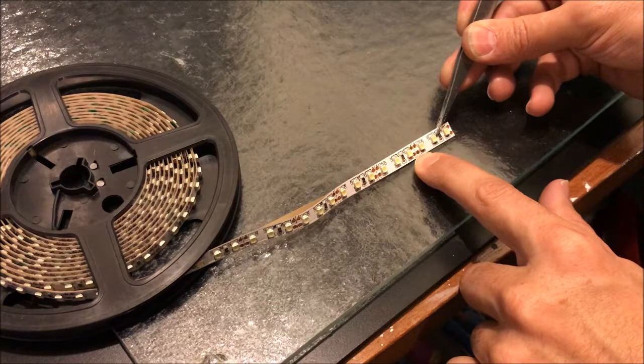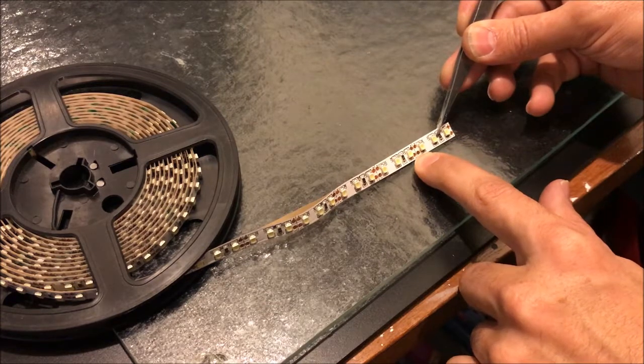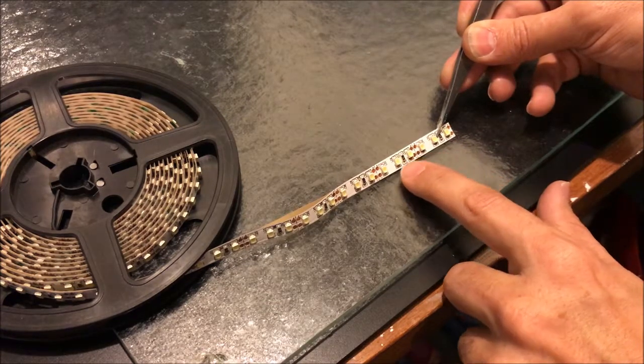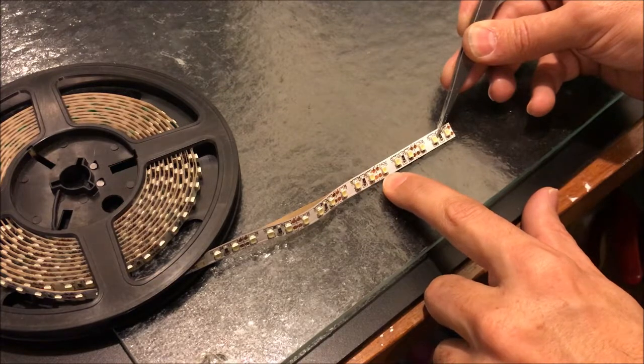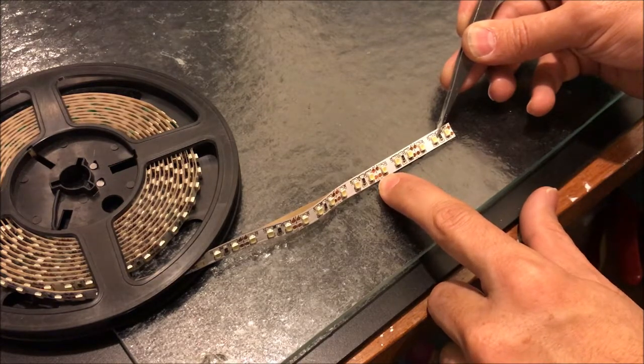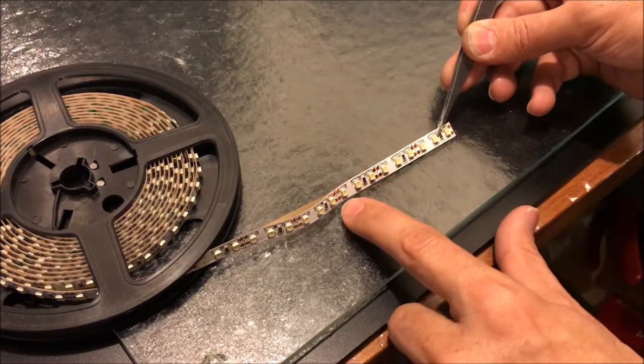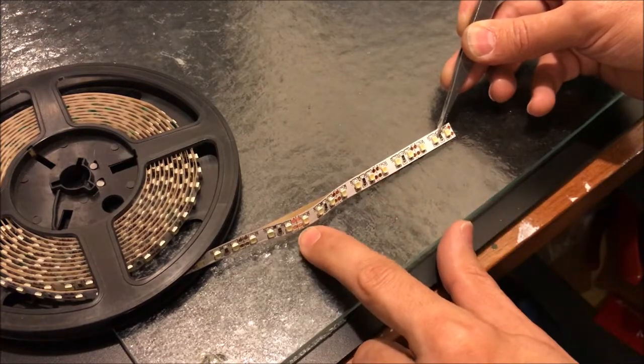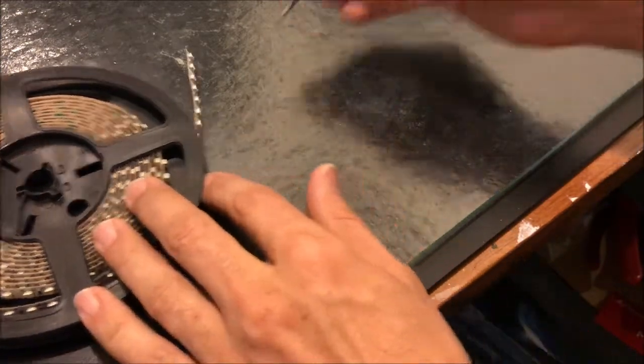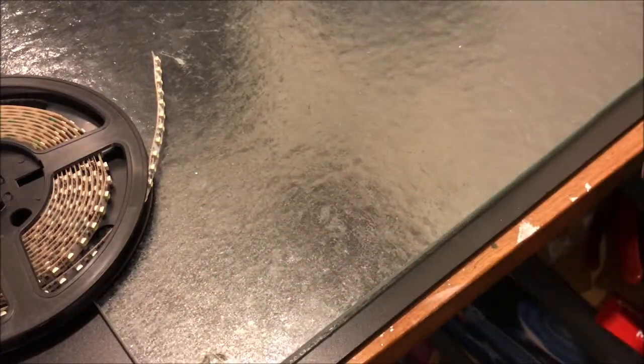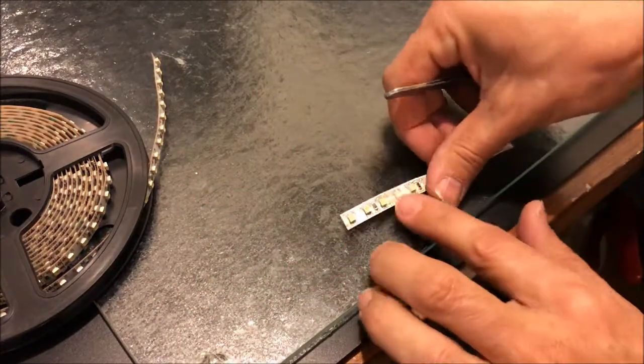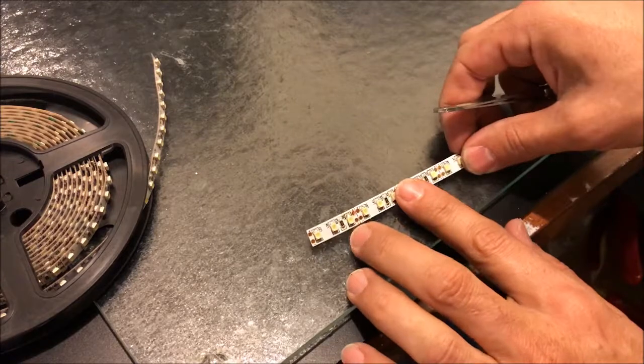So this LED tape you can actually cut it into different sections. It goes by about three LEDs, so you see I've got three LEDs, then I've got my copper connectors. And in between those two pairs of connectors there's a little cut line where you can cut it. So you can cut this up into however many parts you want.